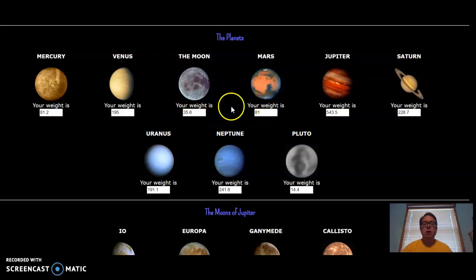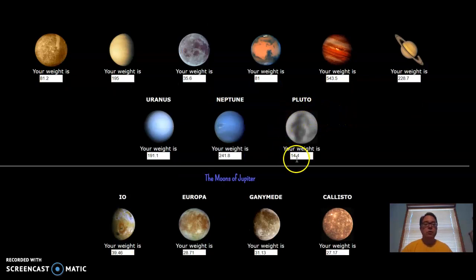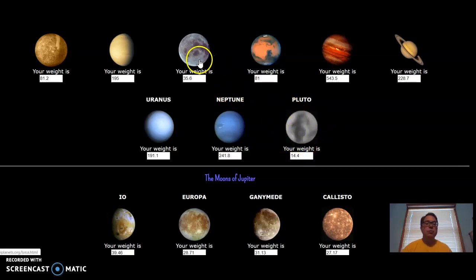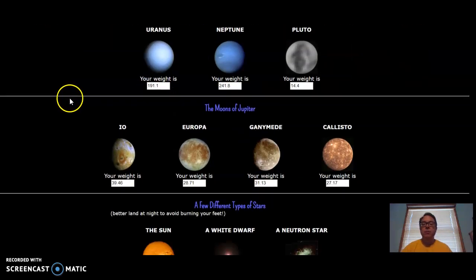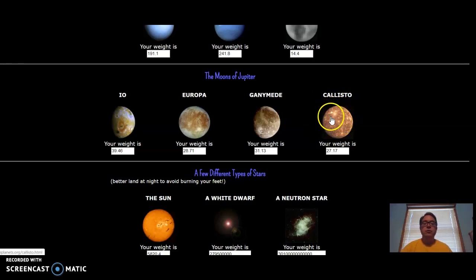So over here, on our moon he would weigh 35 pounds. On Jupiter, 543 and a half pounds. On Pluto, the dwarf planet, 14 pounds. Notice that he would weigh less on Pluto than he would on our moon — that's because Pluto is even smaller than our moon. Mercury: 81 pounds. These right here are moons of Jupiter — Io, Europa, Ganymede, and Callisto. These are not the only moons of Jupiter; Jupiter has over 60 moons that we know of.